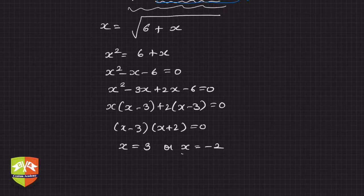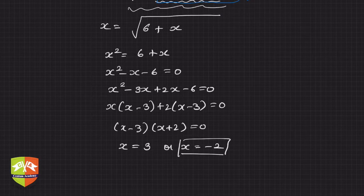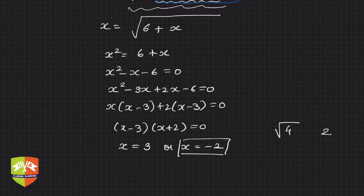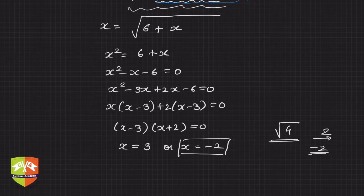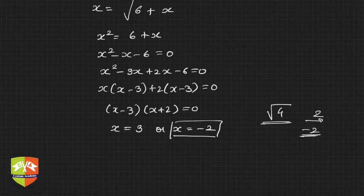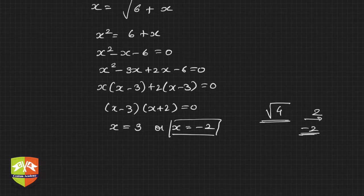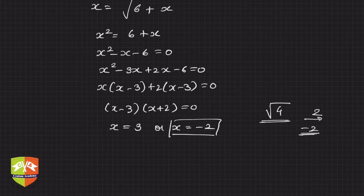So now we are going to reject this value x equals minus 2 because square root of anything has been defined as positive. So whenever we say square root of 4, we mean 2 and never minus 2. So don't get confused. So whenever you see root 4, you should write 2 and never minus 2. Then you will say how come? Because minus 2 square is also 4, but that comes from here.